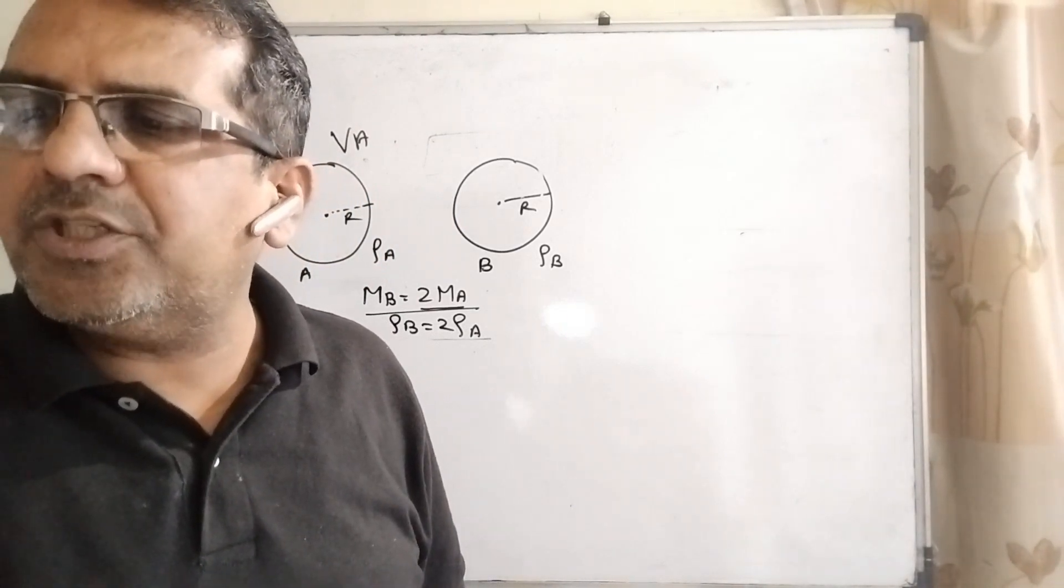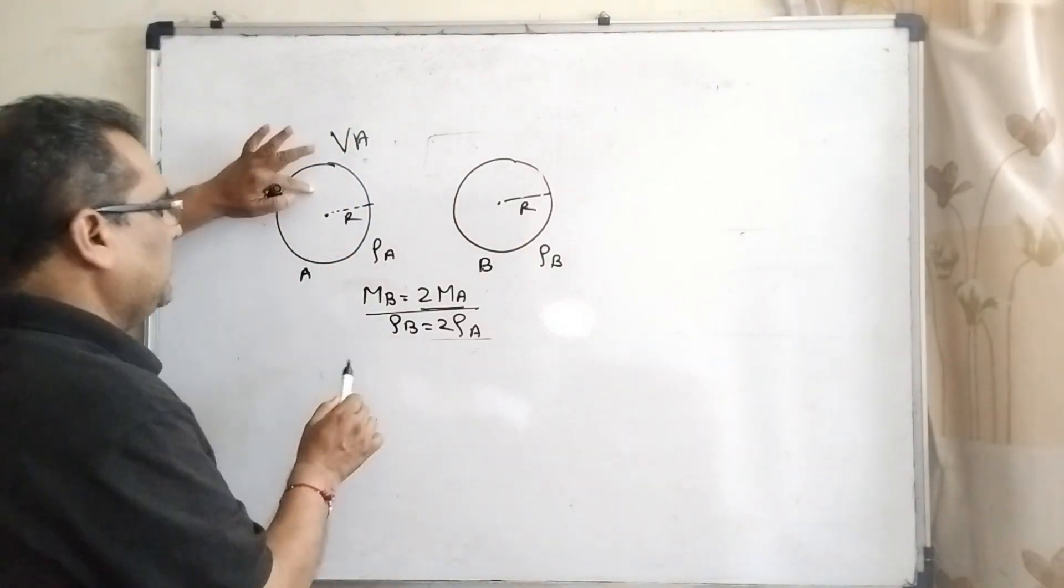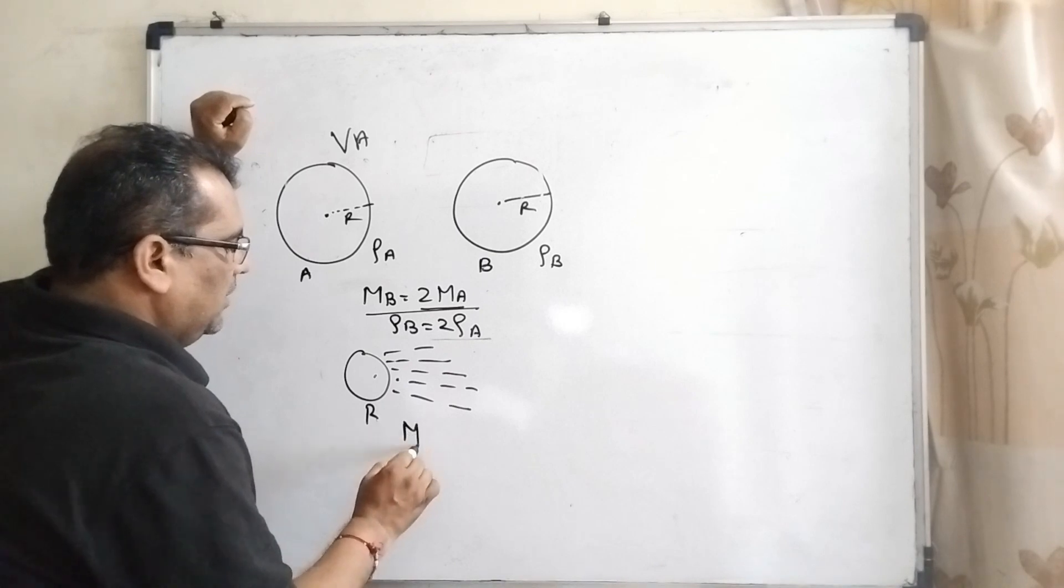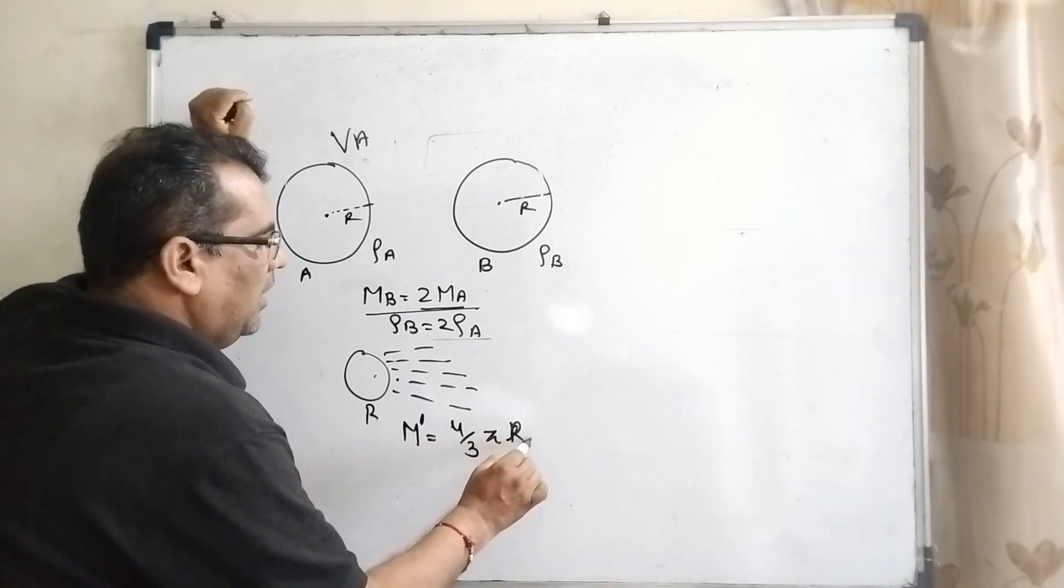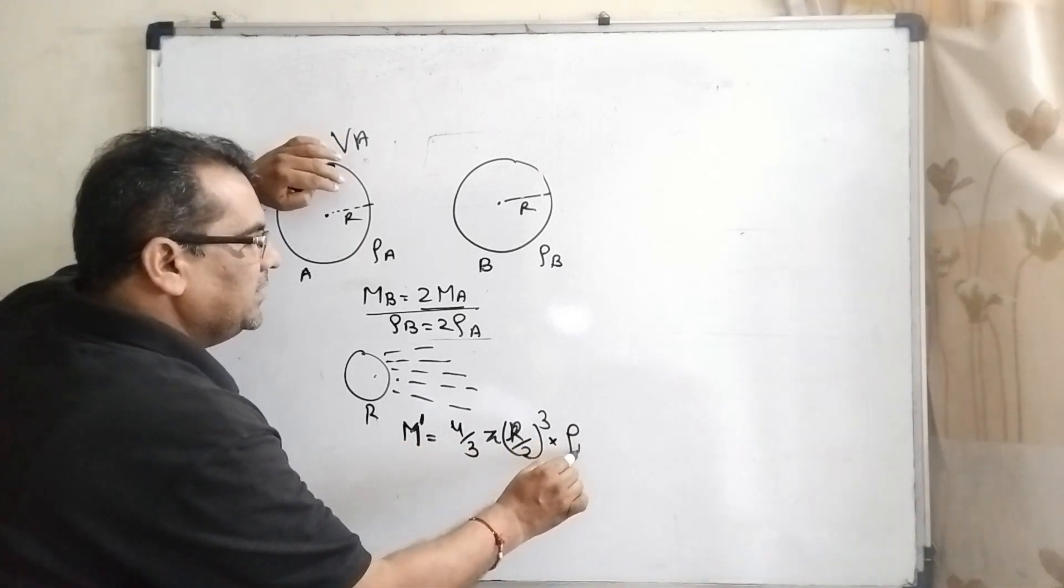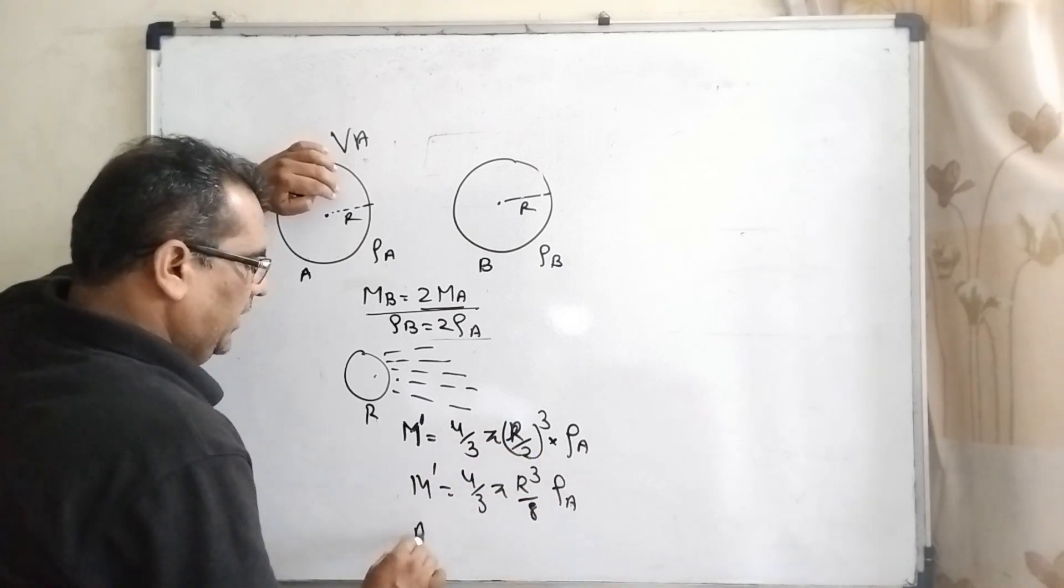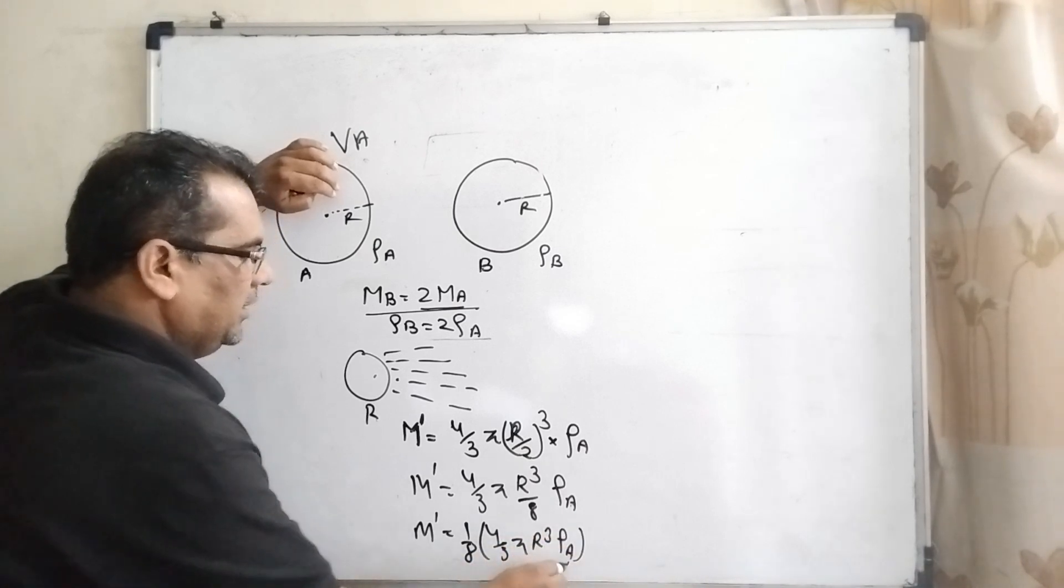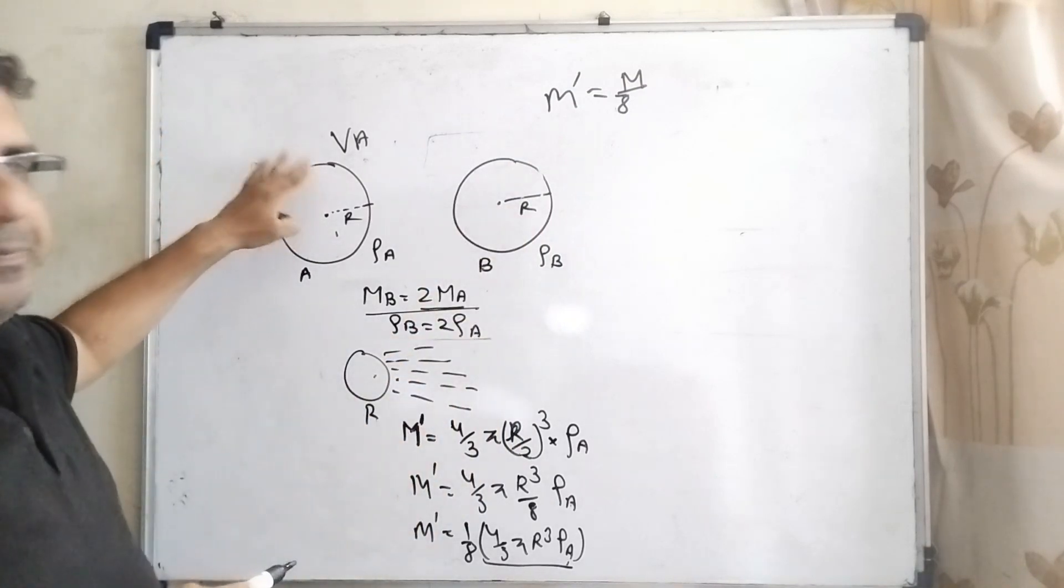Now, the second thing given is that after the interaction process, star A loses some of its mass so that its radius is halved. It means it loses some mass and now this radius becomes half. Then M' equals 4/3 π (R/2)³ ρA. Dividing by 8, M' can be written as 4/3 π R³ ρA divided by 8.